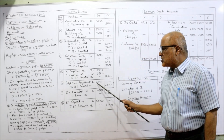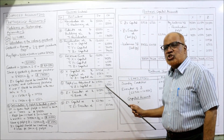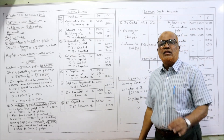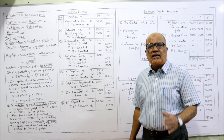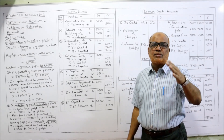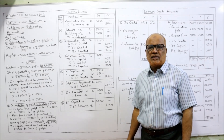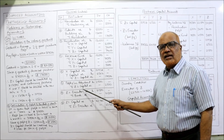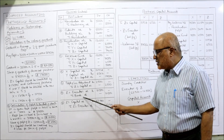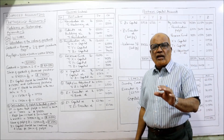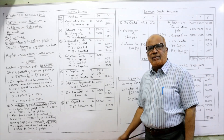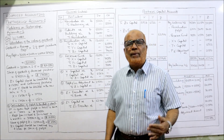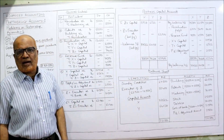Entry: Profit and Loss Adjustment Account Dr. to Z Capital 2,500, being the share of profit of the deceased partner. Then Z Executors Account Dr. to Bank 10,500 — as given in the problem, 10,500 cash is paid immediately to the executors of Z. The remaining balance will be transferred to Z Executors' account after making all adjustments.